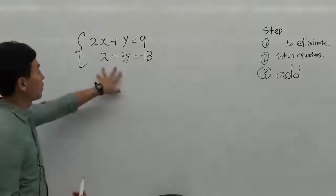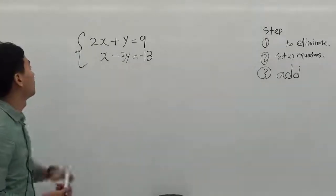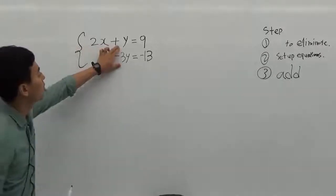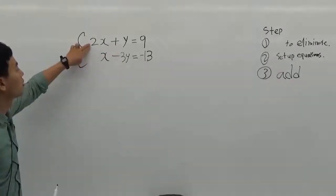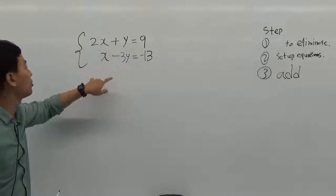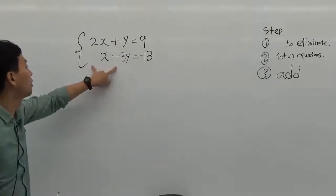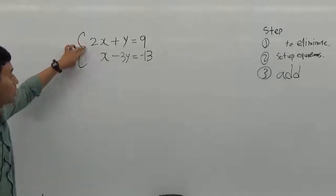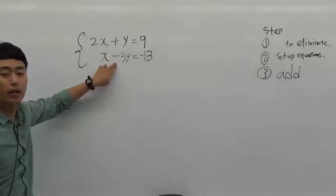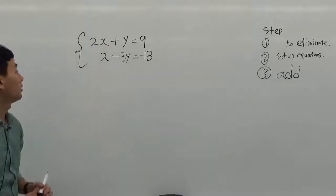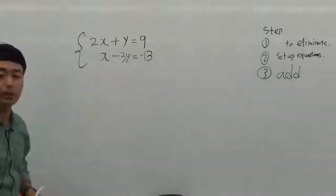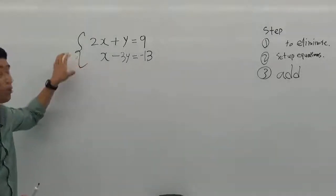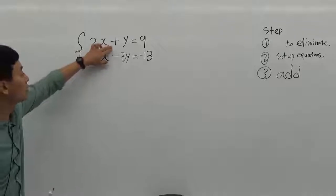The first step is to choose a variable to eliminate. If you see the coefficients of x and coefficients of y, they are all different, like 2 and 1, and 1 and 3. But if you see the sign, the sign of x is positive and positive, and the sign of y is positive and negative. So I can choose y to eliminate, because it is easy to eliminate the y by adding the two equations, since they are different signs.